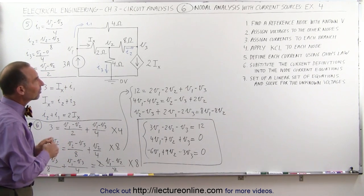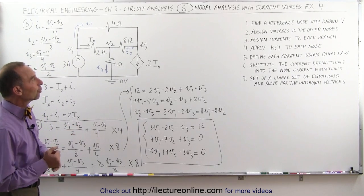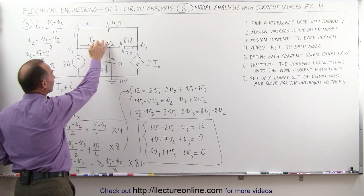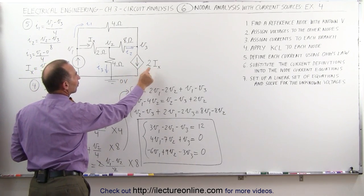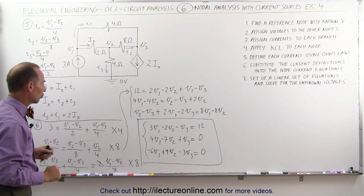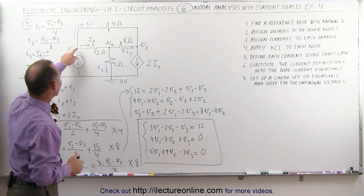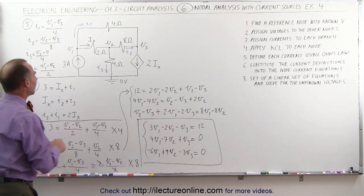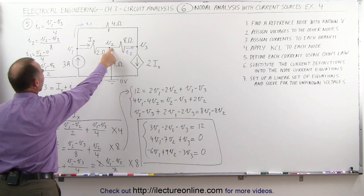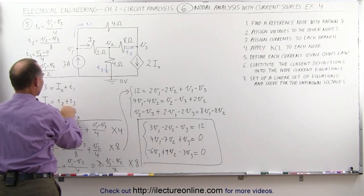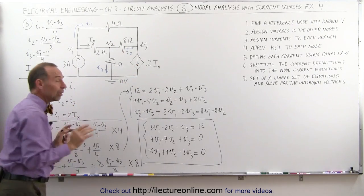Let's review what we've done so far. Step 1: we found the reference voltage. Step 2: we assigned voltages to the three nodes — V1, V2, V3. Step 3: we assigned currents to each branch — I sub x was given, and we defined I sub 1, I sub 2, and I sub 3. The dependent current source is twice I sub x, and there's an independent current source. Step 4: we applied Kirchhoff's current law to each of the three nodes to get three equations.